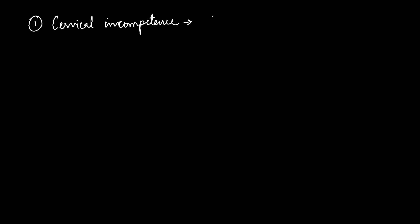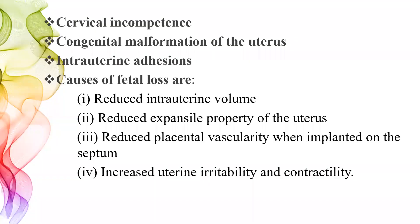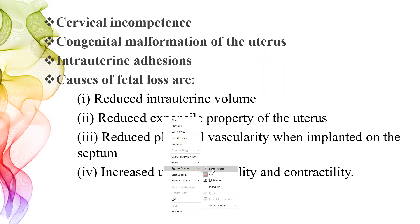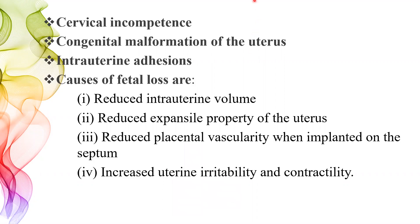Cervical incompetence — either acquired or congenital — is the most common cause of mid-trimester abortion. The second is congenital malformation of the uterus, such as a bicornuate uterus or septate uterus, which can cause mid-trimester or even recurrent abortion. Intrauterine adhesions — as in uterine synechiae or Asherman syndrome — can also lead to abortions.